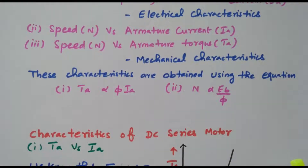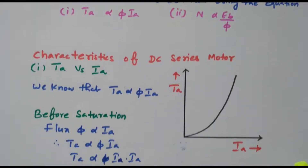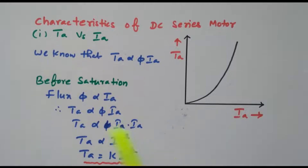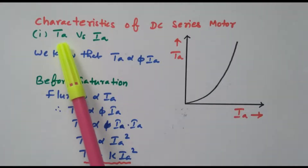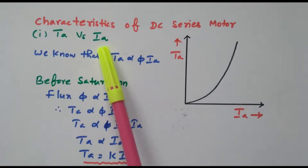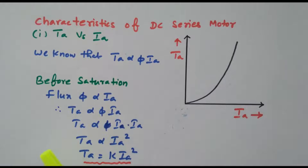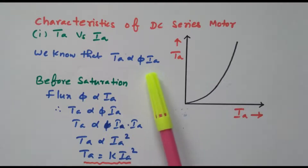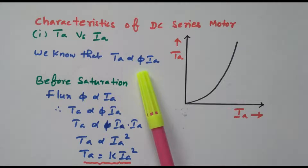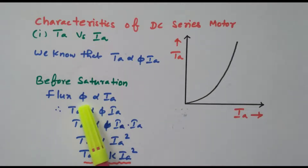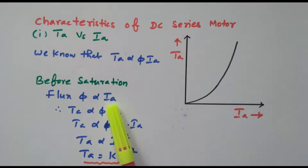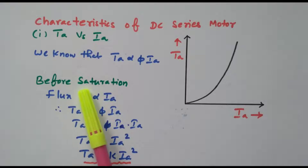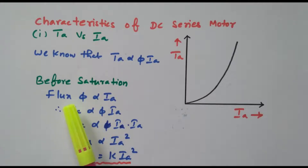First we will go to the characteristics of a series motor. The first characteristic is armature torque versus armature current, T_A versus I_A. We know that T_A is directly proportional to φ into I_A — that is the basic relation. But in the case of a series motor, φ is directly proportional to I_A. There are two cases: before saturation and after saturation.